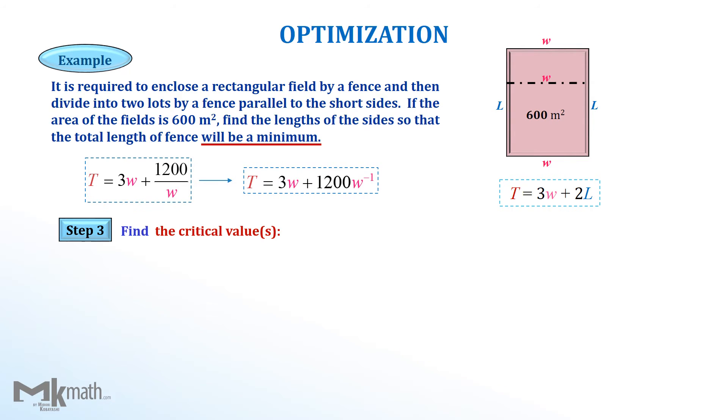We have now t equal 3w plus 1,200 over W to the negative 1 power. Taking the derivative of the total function to get 3 minus 1,200 over W to the negative 2 power, make the derivative be equal to zero to find the critical values. Now, we need to solve for W.